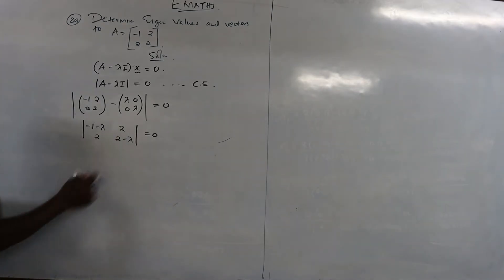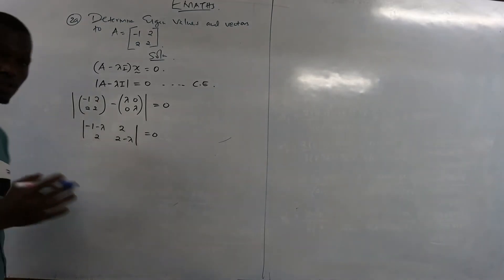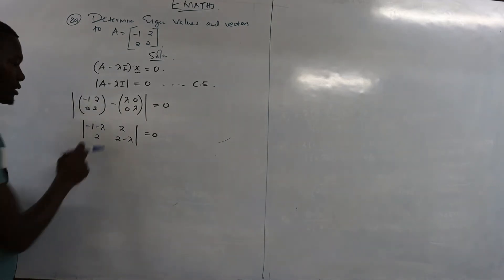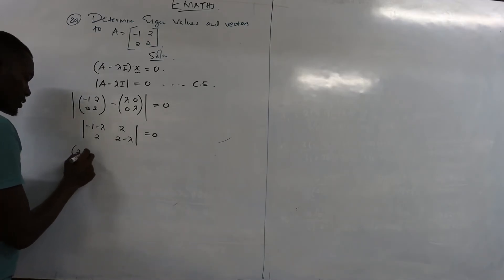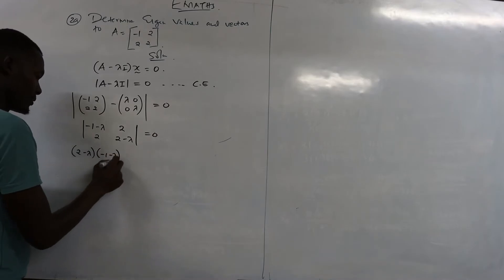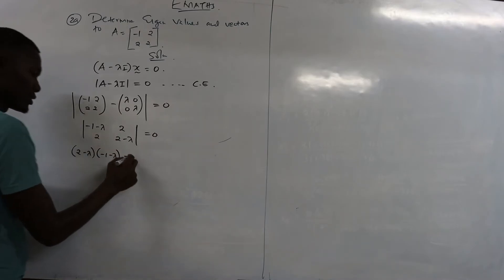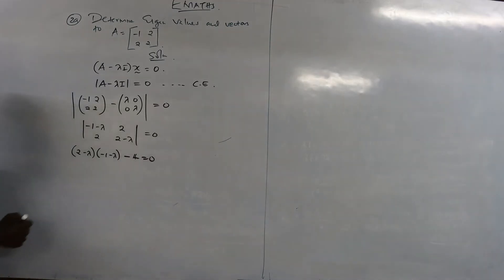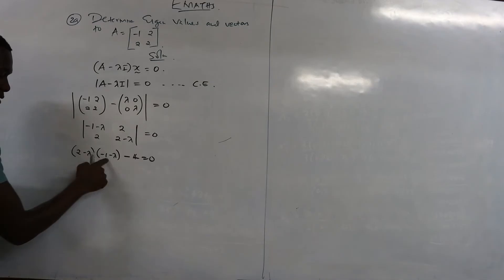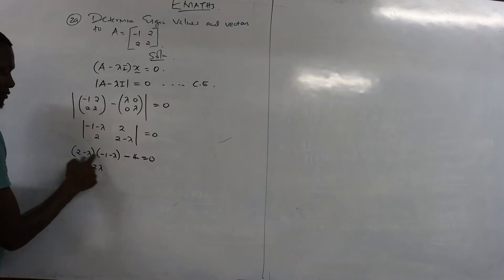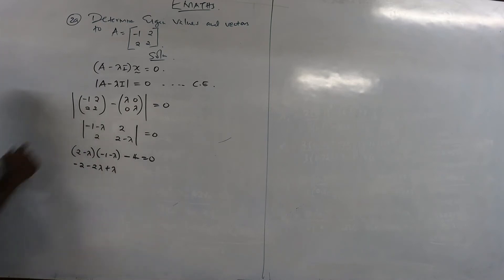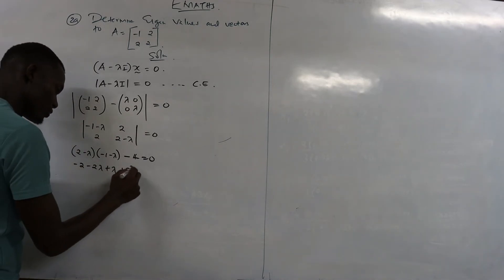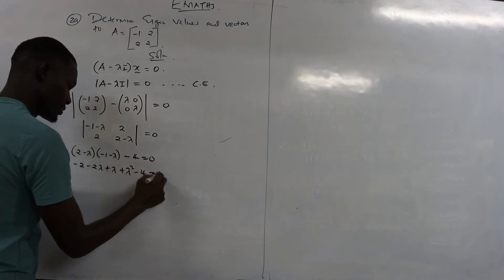Now we calculate the determinant. For a two-by-two matrix, multiply the main diagonal elements and subtract the product of the off-diagonal elements. So we have: (negative one minus lambda)(two minus lambda) minus two times two equals zero. Expanding: negative two, minus two lambda, plus lambda, plus lambda squared, minus four equals zero.